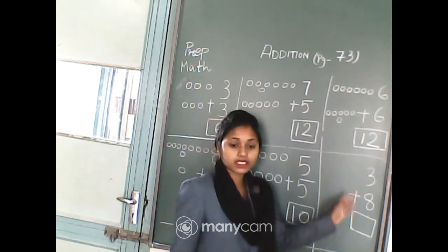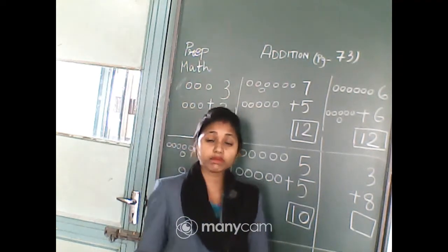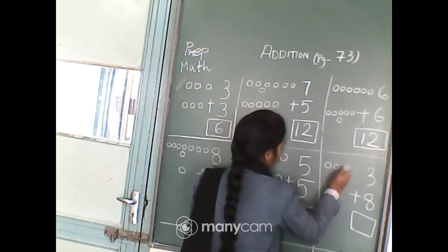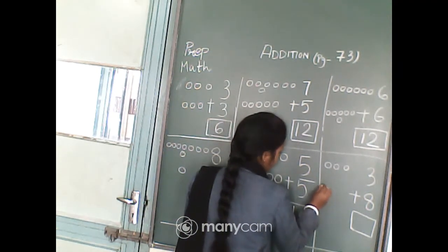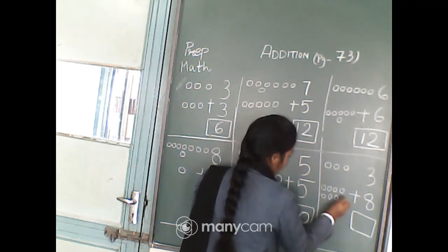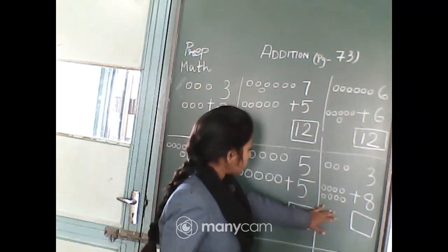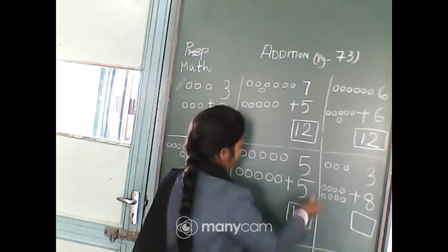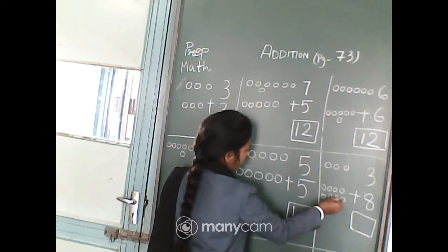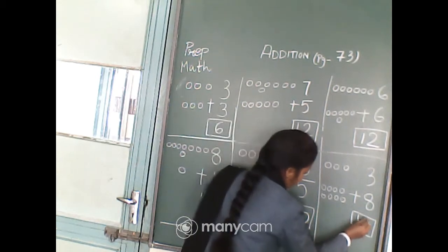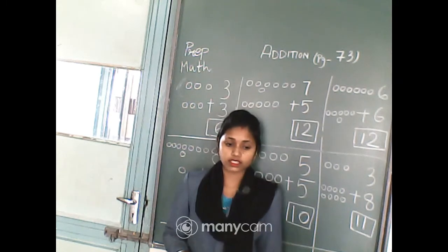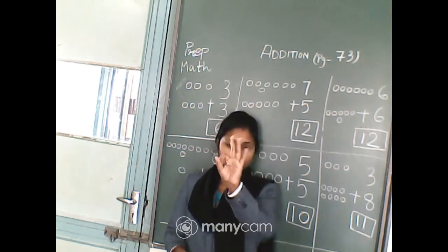Sixth: 3 plus 8. First we will draw the circles: 1, 2, 3. Then we will draw 8 circles: 1, 2, 3, 4, 5, 6, 7, 8. Now we will count 3 plus 8 all together: 1, 2, 3, 4, 5, 6, 7, 8, 9, 10, 11. We will count after 8 using 3 fingers: 8, 9, 10, 11. So 3 plus 8 equals 11.